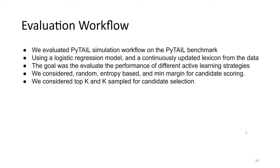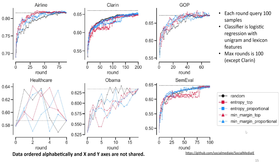In terms of the evaluation workflow, we evaluated PyTL on the PyTL benchmark using a simple logistic regression classifier with TF-IDF based features along with an online-updated lexicon. The goal was to evaluate the performance of various active learning techniques. We considered random, entropy-based, and min-margin based candidate scoring, as well as top-k and k-sampled candidate selection criteria. In terms of the held-out test set performance, we found that almost all active learning strategies perform very similarly, and using very small amounts of data we can achieve performance comparable to the full training dataset for most tasks. We show the performance of sentiment tasks here, but more details for all other tasks can be found in the paper.